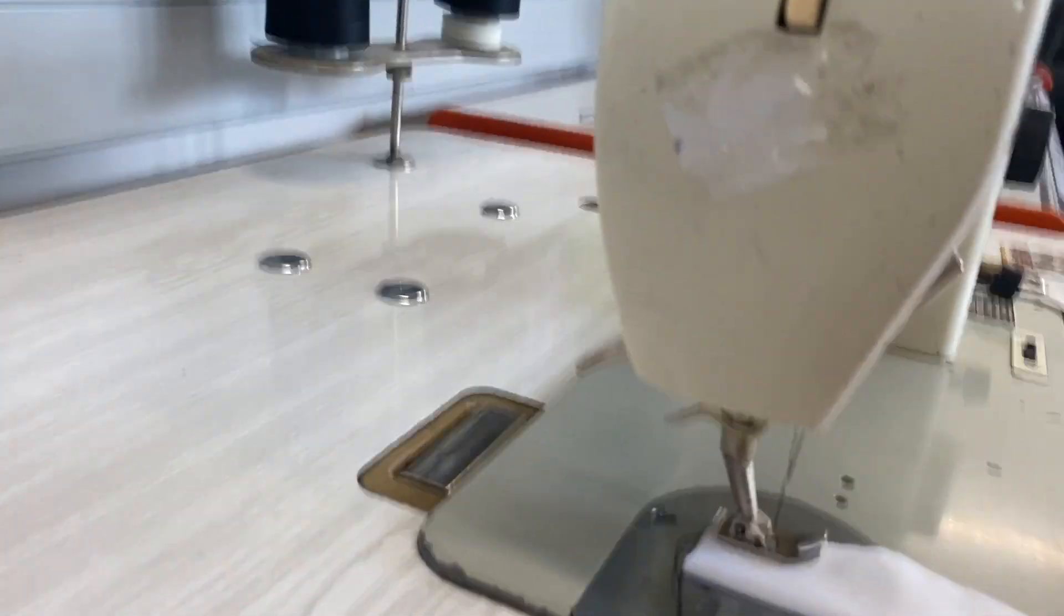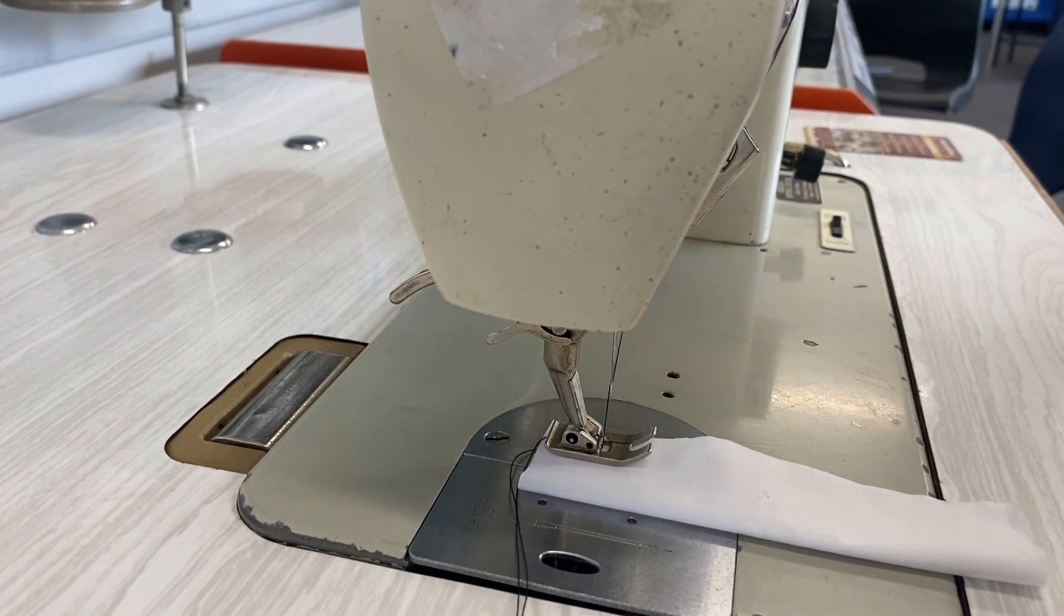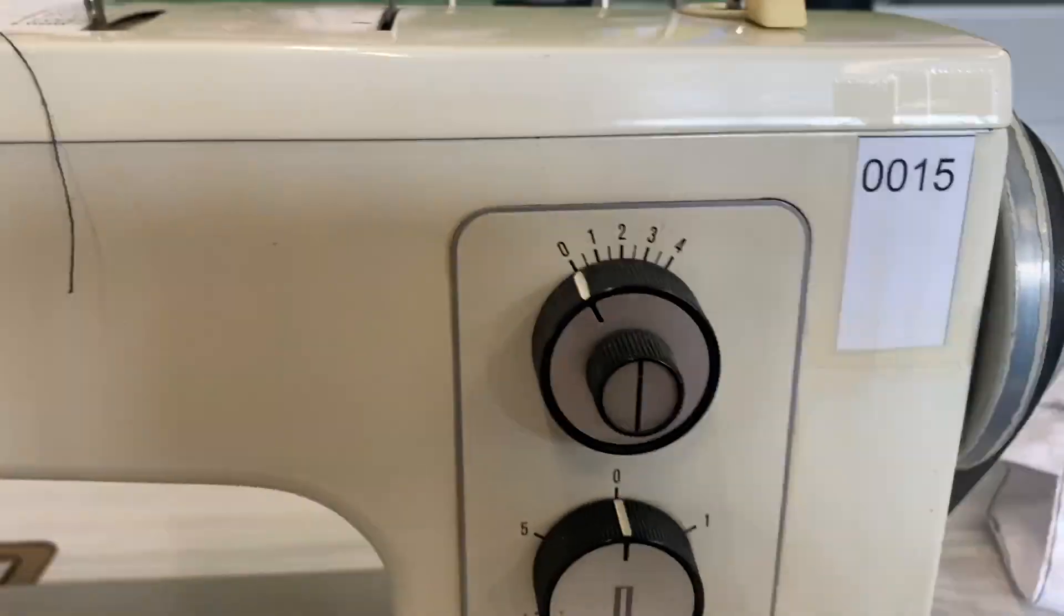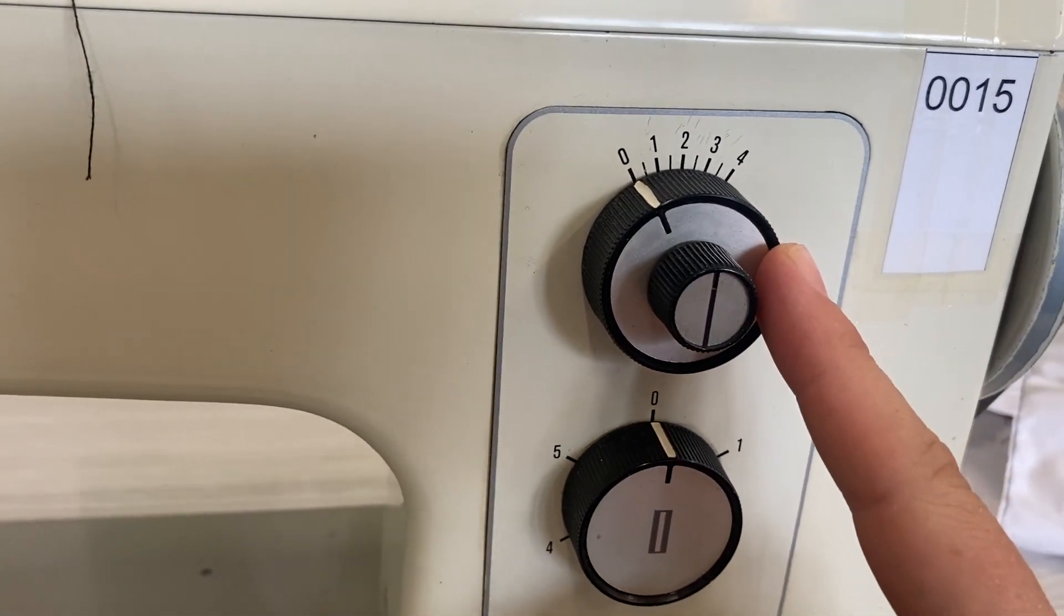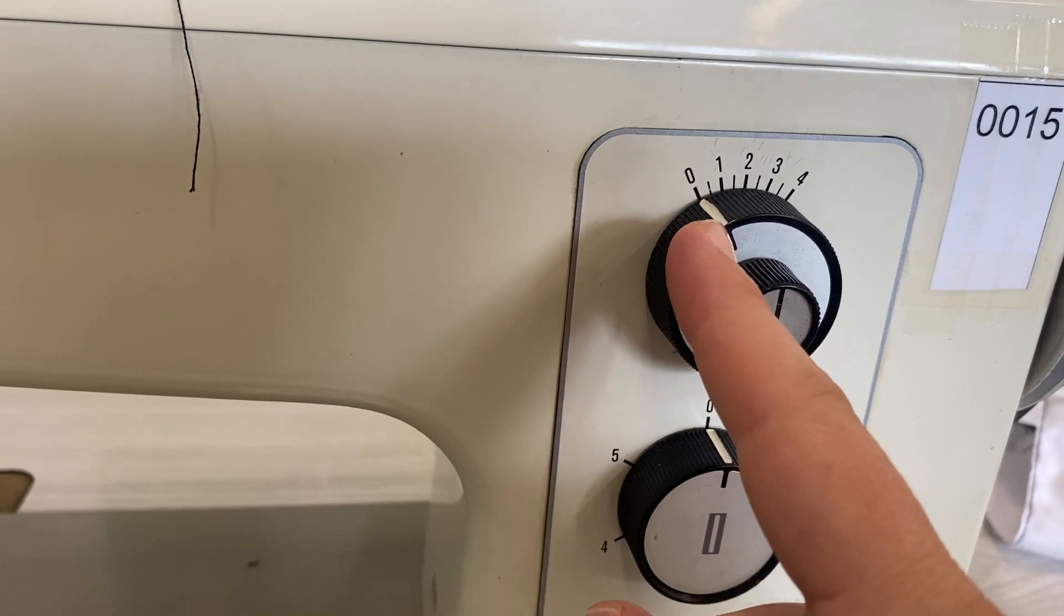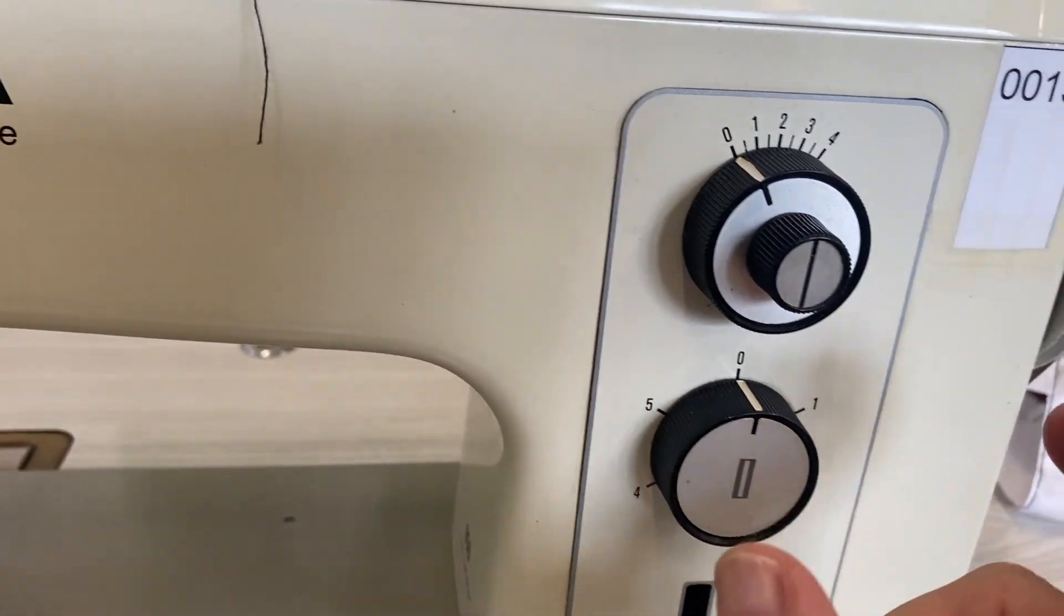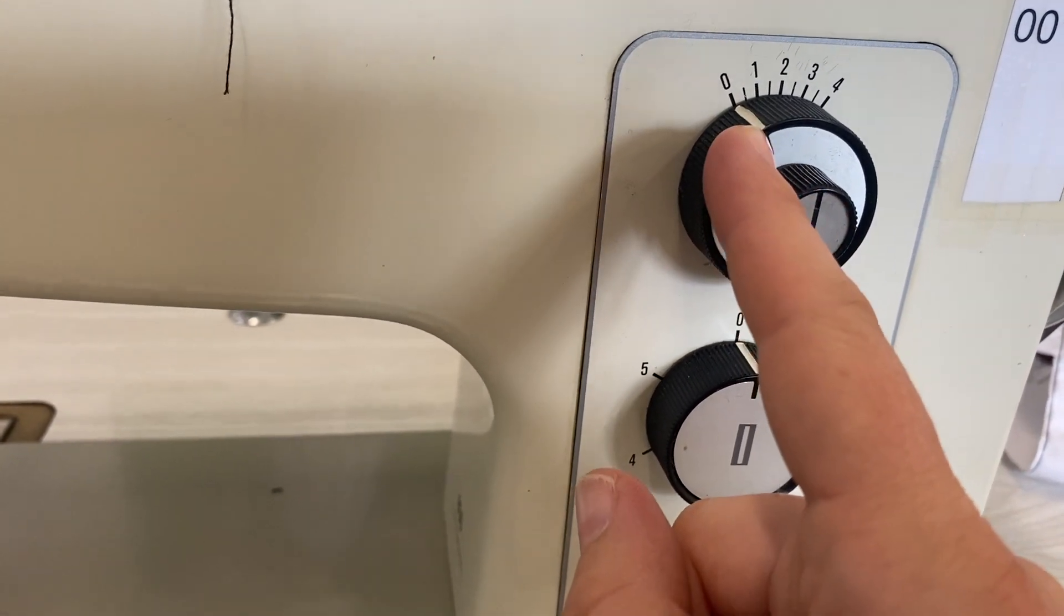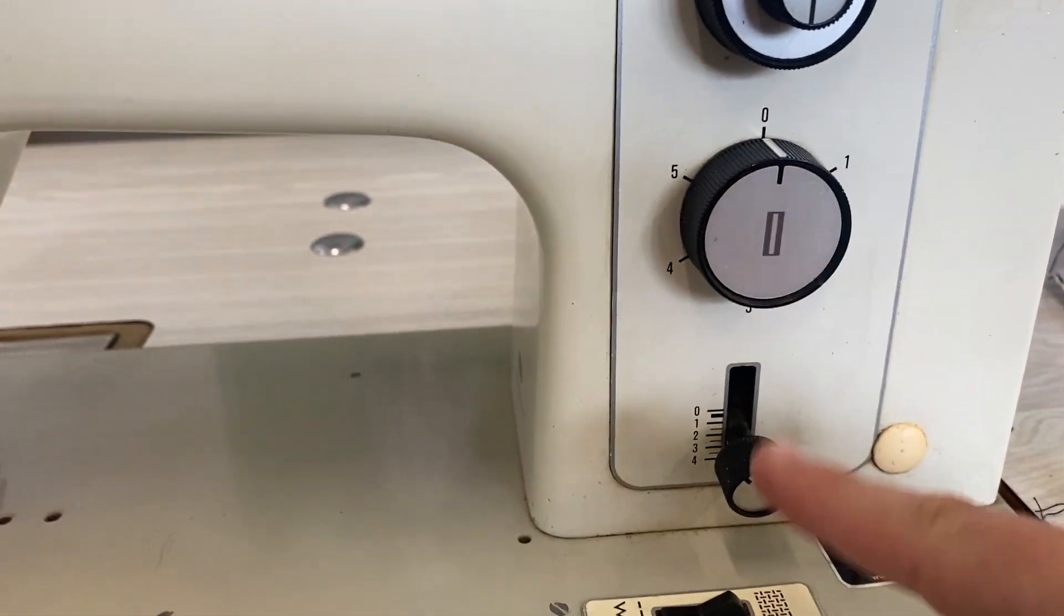When you're ready to go—this is just test fabric, so it's always good to get in the process with test fabric—let's have a look at these dials. This is your stitch width. Because we're doing a straight stitch, we don't want any width. If you had it higher, the wider it goes, which is like a zigzag. For zero width, just for a straight stitch, you want it at zero. This is to make a buttonhole—don't worry about that.